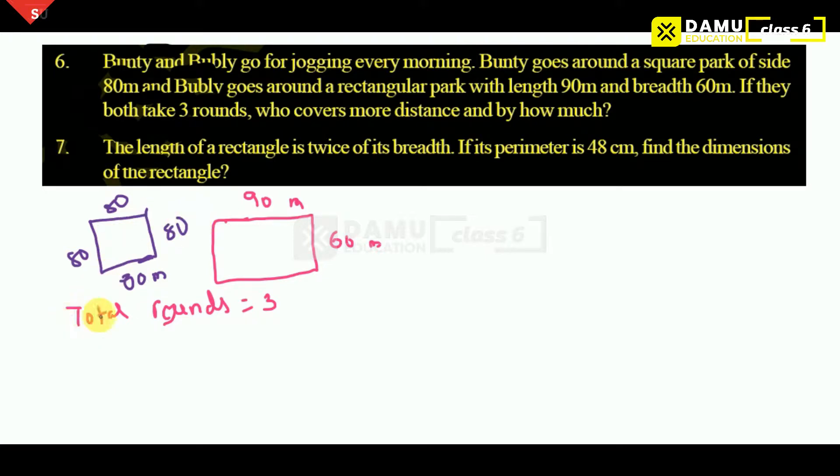First of all, Bunty. How much distance Bunty covered? What is the perimeter of square? Perimeter one time, we have to calculate. What is the total length? He went total around this. So what is that? 4 into 80. What is that?